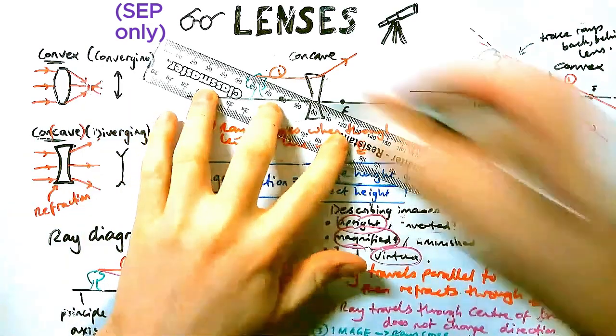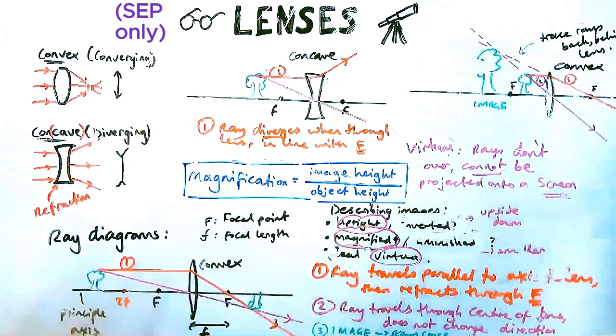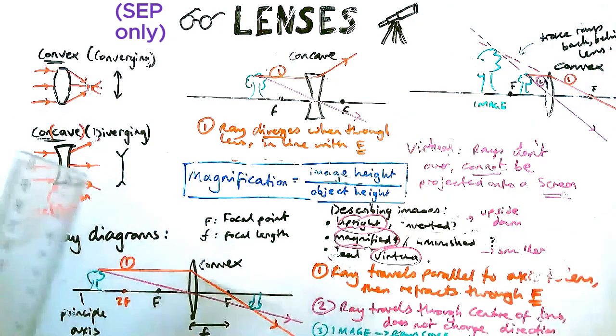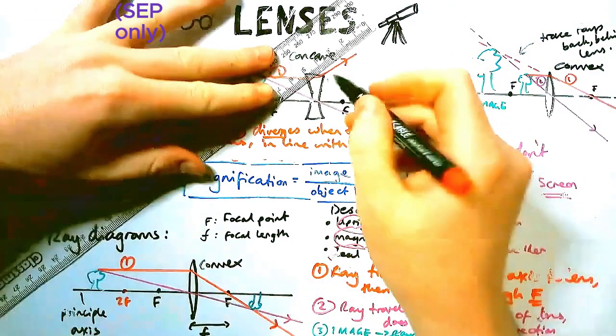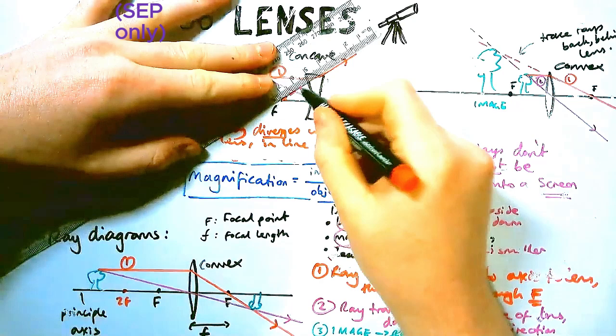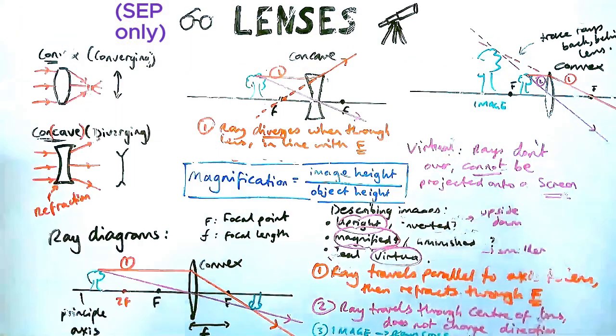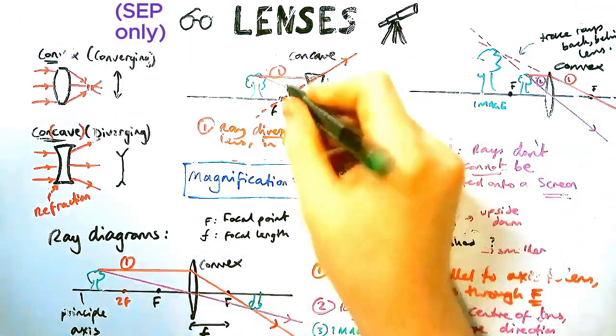Ray two is exactly the same. It's only ray one that's changed. Ray two goes through the center of the lens. But again, we notice these rays don't cross over. So we have to trace our original one back with some dotted lines. And we do find if we do that, they do cross over on the left-hand side of the lens.